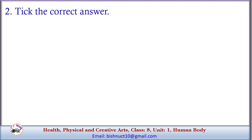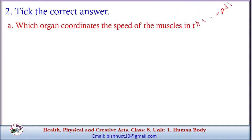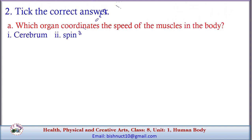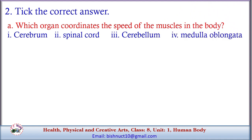Question 2: Tick the correct answer. A. Which organ coordinates the speed of the muscles in the body? Options: 1. Cerebrum, 2. Spinal Cord, 3. Cerebellum, 4. Medulla Oblongata. Answer: 3. Cerebellum.